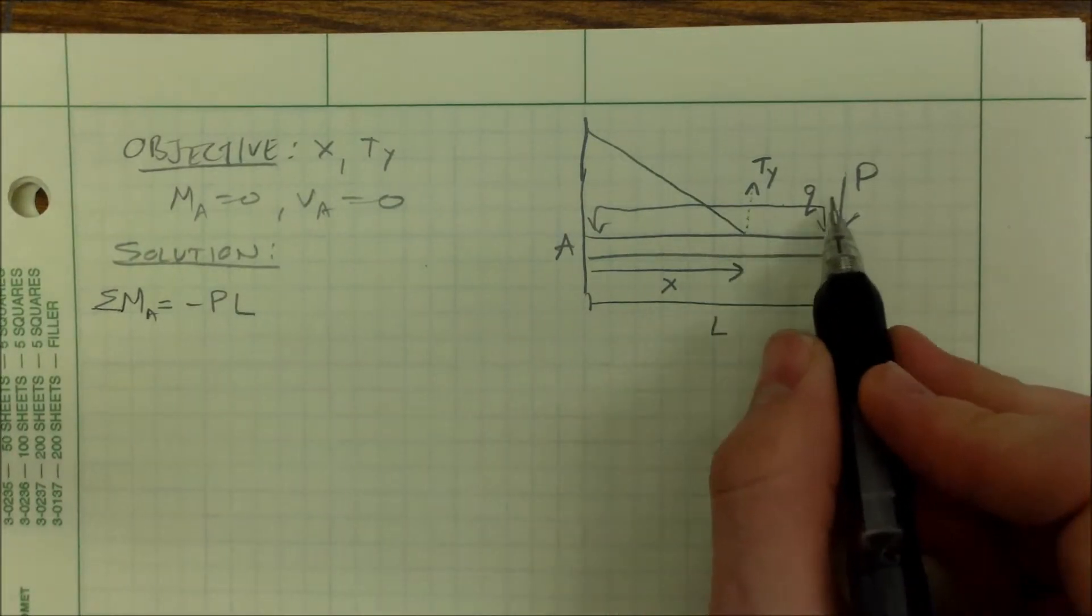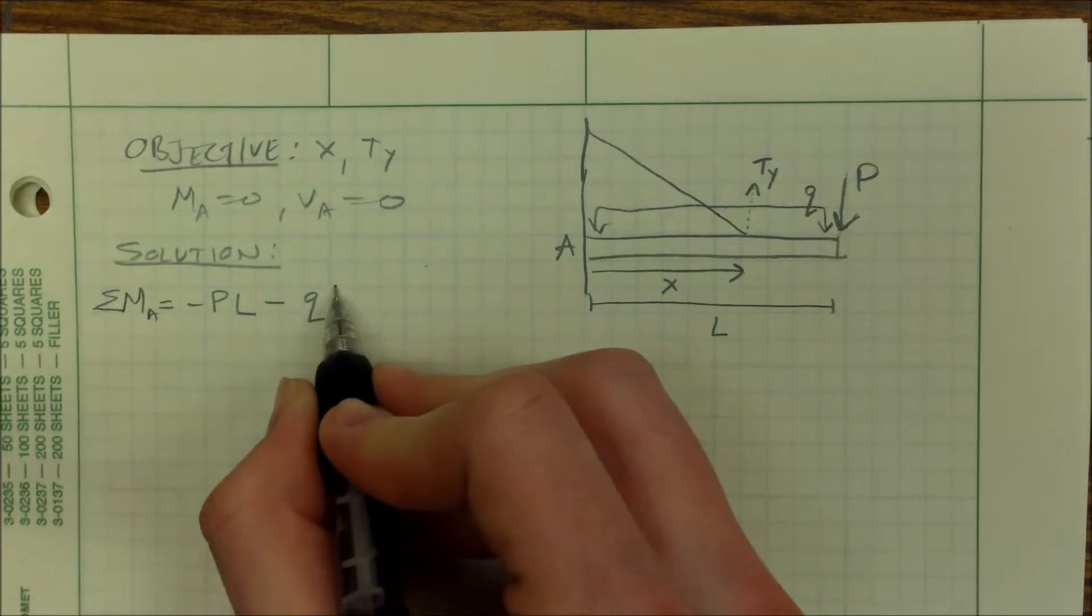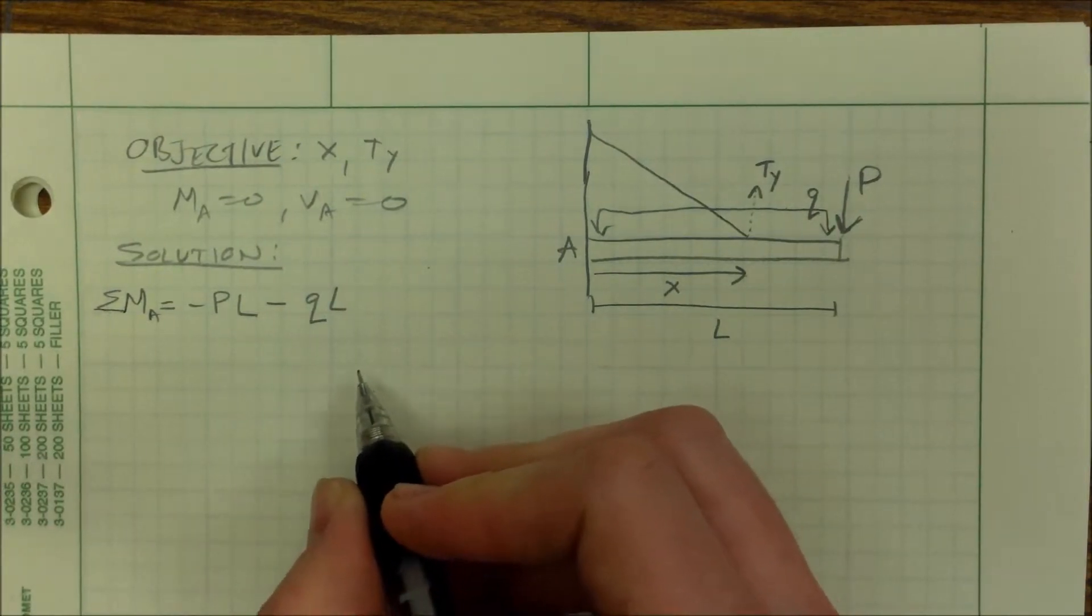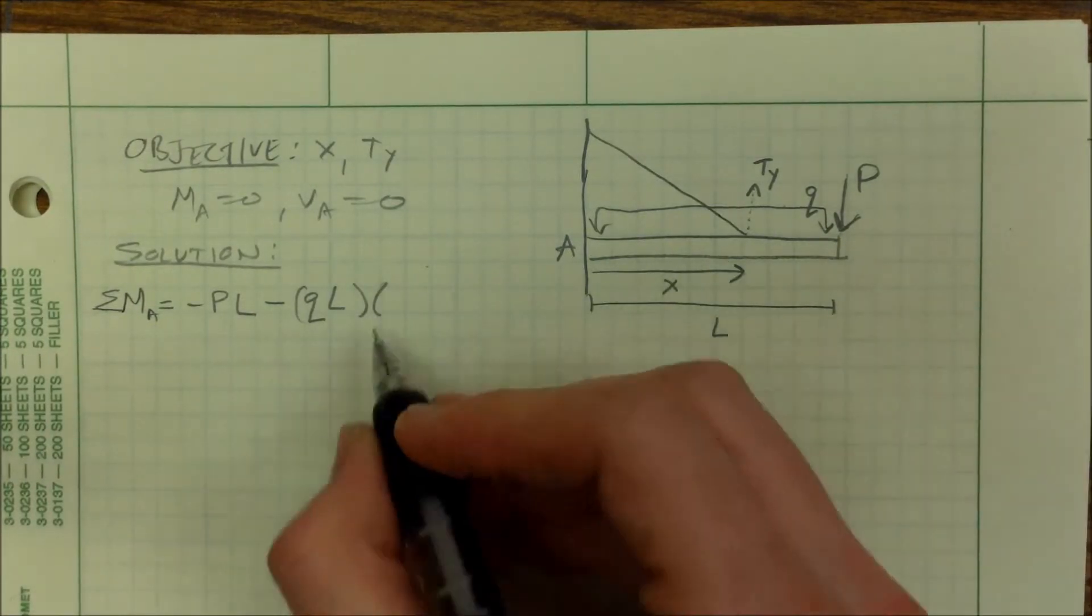We also have our distributed load, that's also a negative moment. That's Q times L to get the force, and we have to multiply it times its moment arm, which is L over 2.